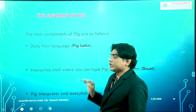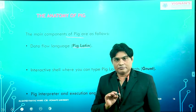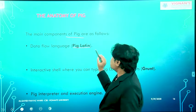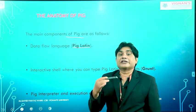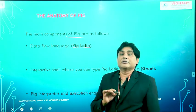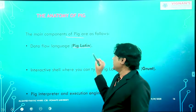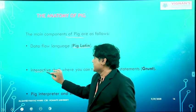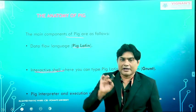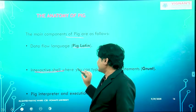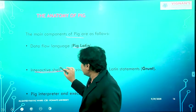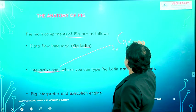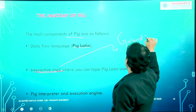Pig Latin is the main component through which we write commands and scripts, and execute them. Everything can be done using Pig Latin. Now, Pig Latin has an interactive shell through which you pass commands and write scripts. That shell is called the Grunt shell - this is very important for Pig.